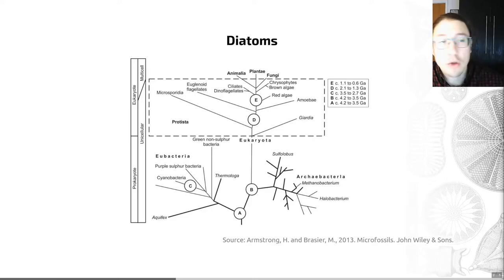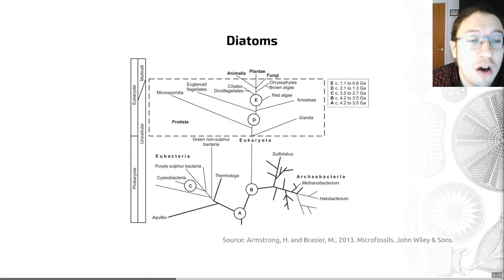They are both planktonic, floating in the water column, and benthic, living on the seafloor. In deep waters, once they die and sink to the bottom, they can accumulate as diatomaceous ooze or diatomite—sediments made of silica composed almost entirely of diatom frustules.